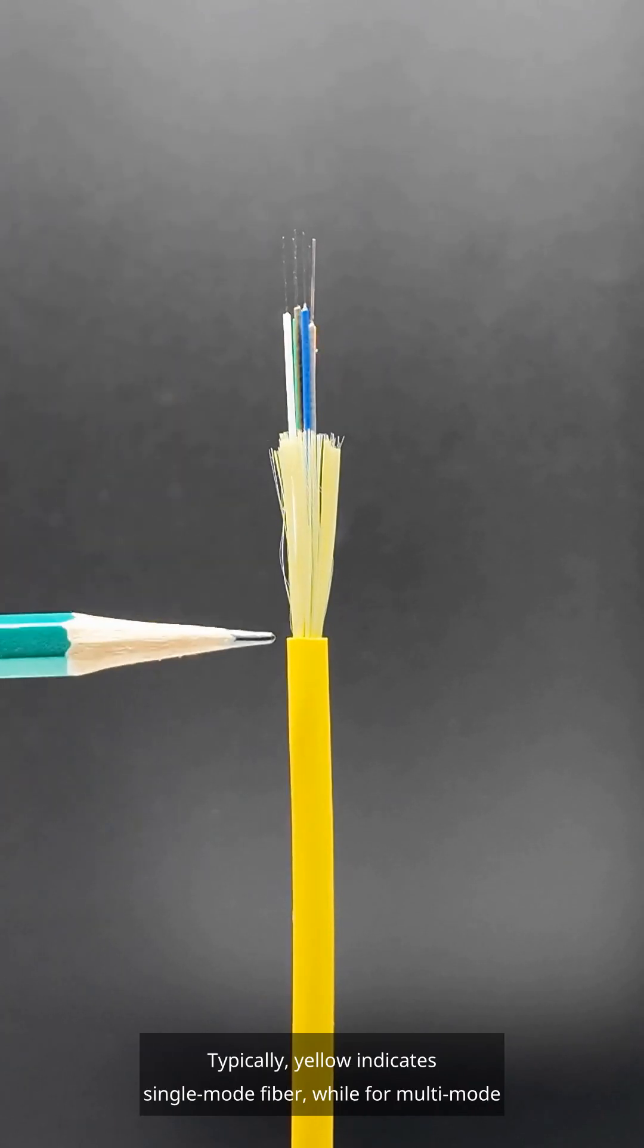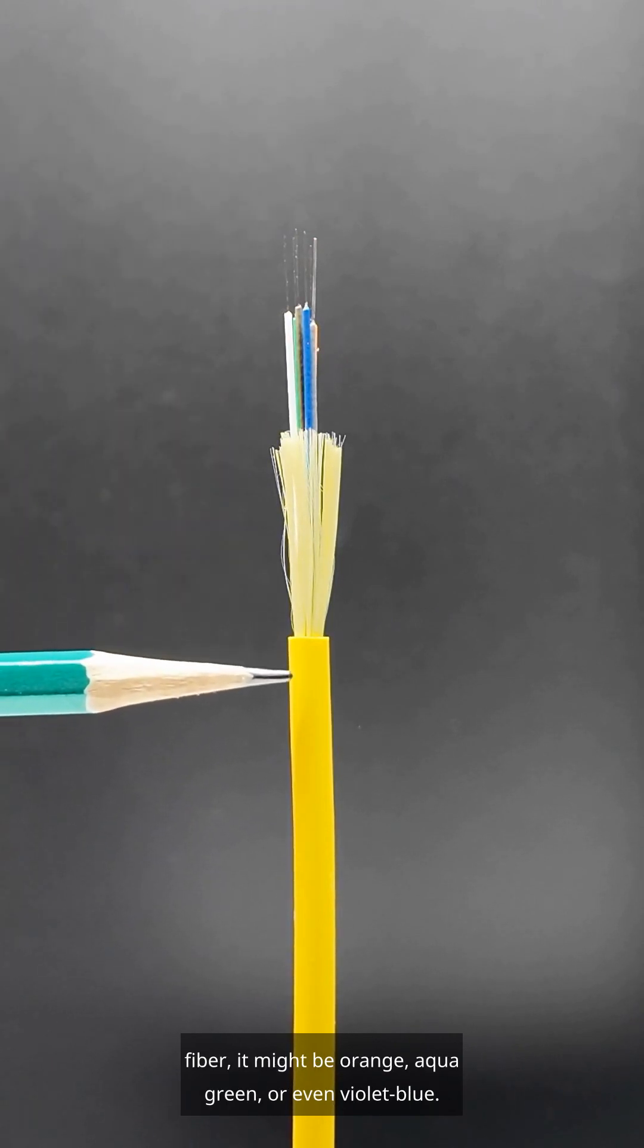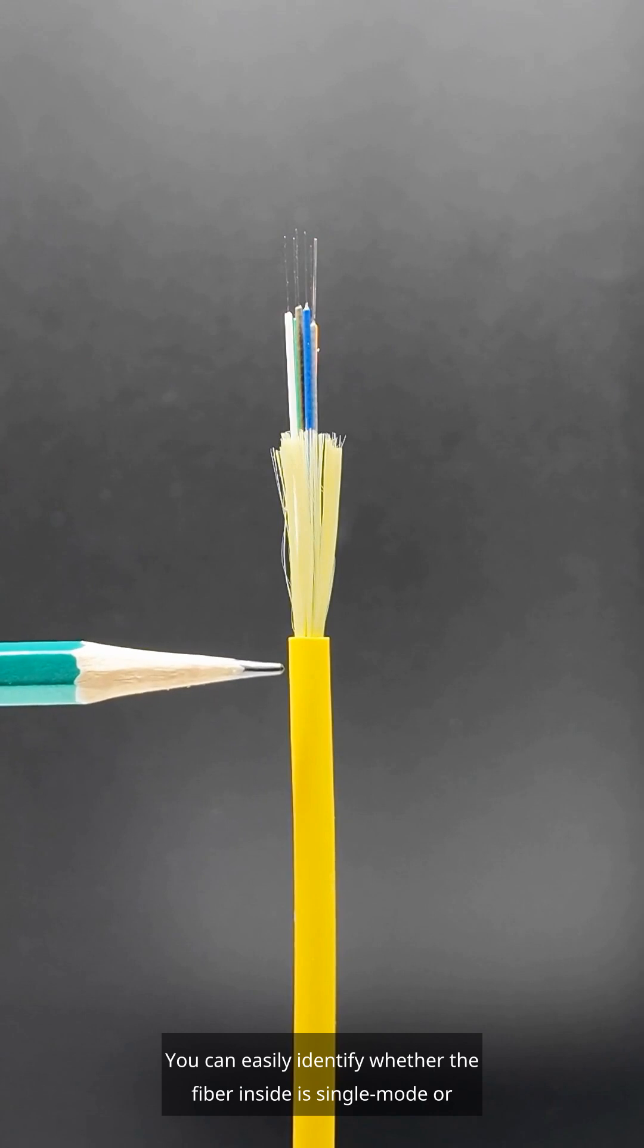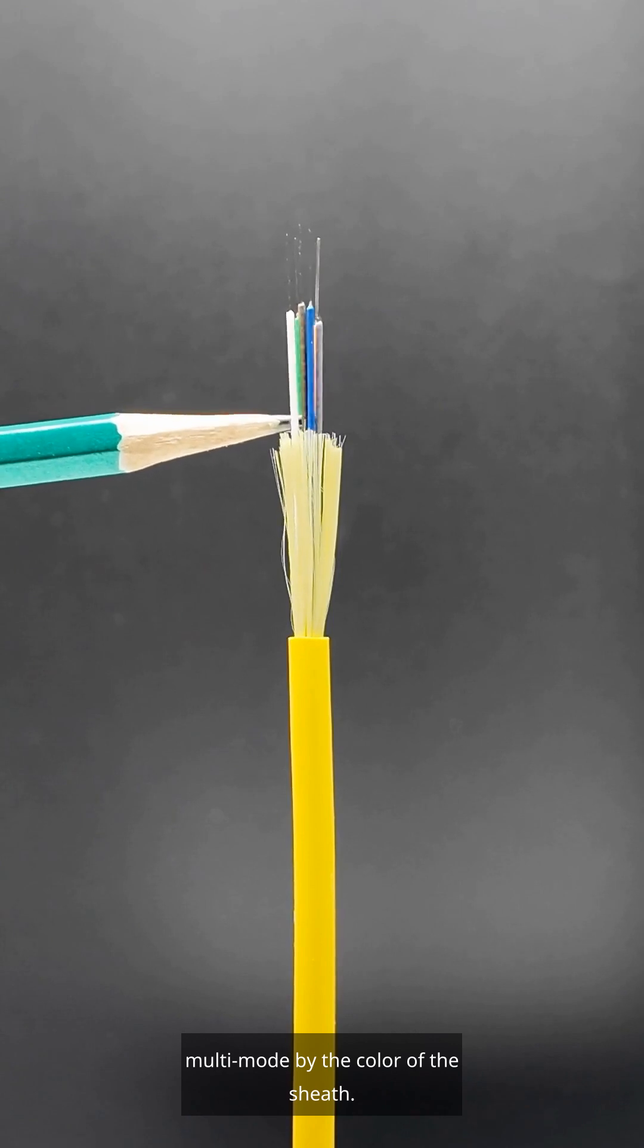Typically, yellow indicates single mode fiber, while for multi-mode fiber, it might be orange, aqua green, or even violet blue. You can easily identify whether the fiber inside is single mode or multi-mode by the color of the sheath.